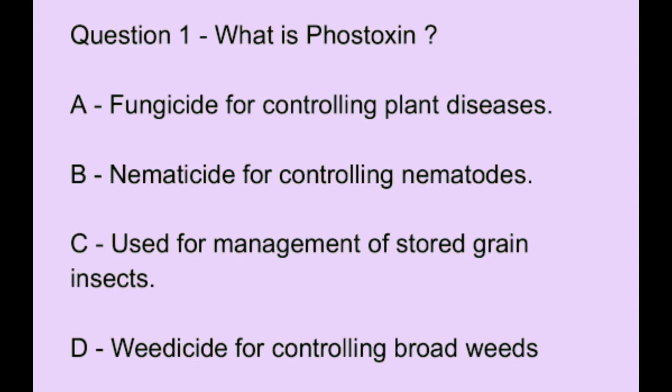Question number 1. What is phos toxin? Option A: fungicide for controlling plant diseases. Option B: nematocyte for controlling nematodes. Option C: used for management of stored grain insects. Option D: herbicide for controlling broad weeds. The correct answer is option C, which is used for the management of stored grain insects.